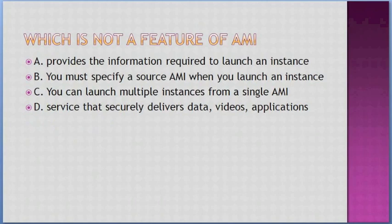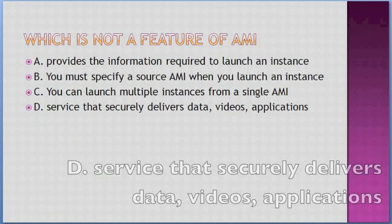Which is not a feature of AMI? Options: A. Provides the information required to launch an instance, B. You must specify a source AMI when you launch an instance, C. You can launch multiple instances from a single AMI, D. Service that securely delivers data, videos, and applications. Answer: D — service that securely delivers data, videos, and applications.